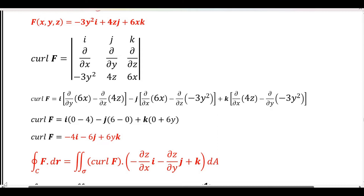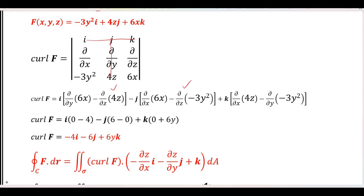We substitute the formula into the determinant. First we ignore this column, then determine the next column. For the first row, second column — ignore this column. Now we differentiate: with respect to y gives 0, second row with respect to z gives 4, and minus 4. With respect to x gives 6x, with respect to z gives 0, with respect to x gives 0, and final row with respect to y gives minus 6 — minus minus becomes plus 6 — y gives 0.